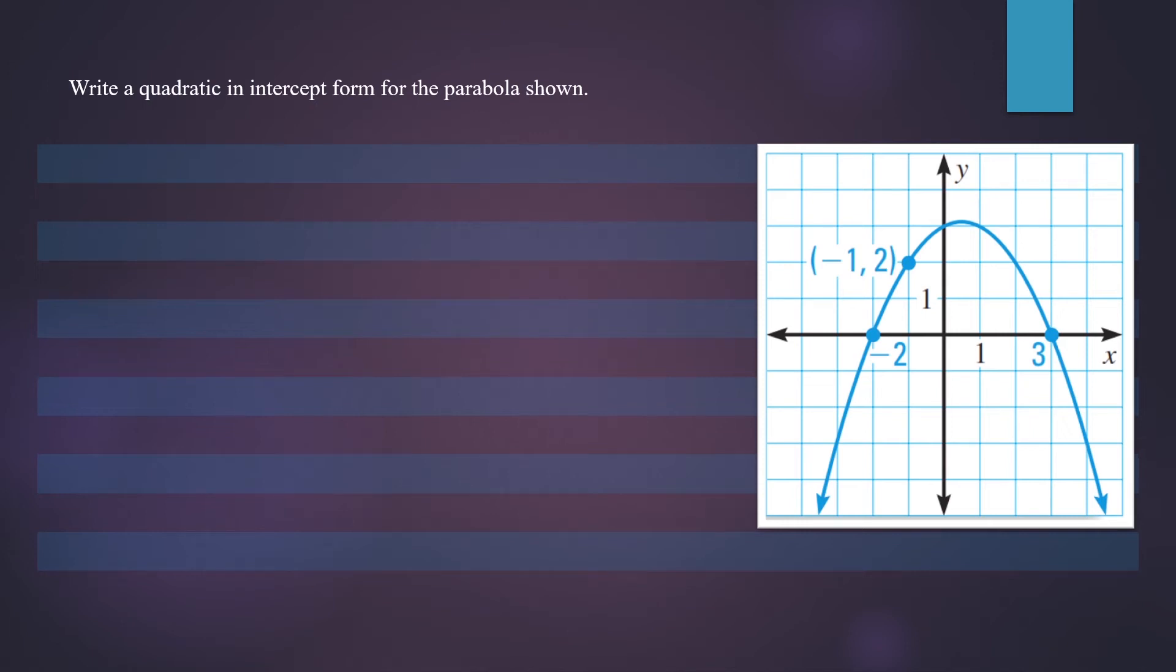In this question, we want to write a quadratic in intercept form for the parabola shown. So the intercept form can be written as a times x minus p times x minus q.